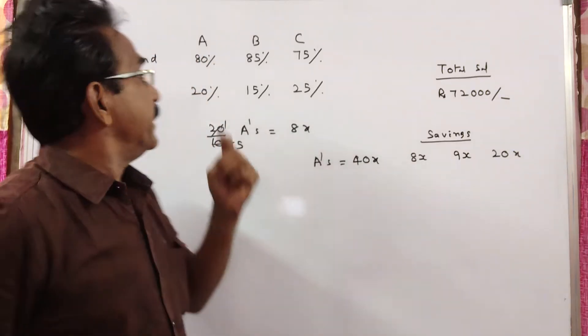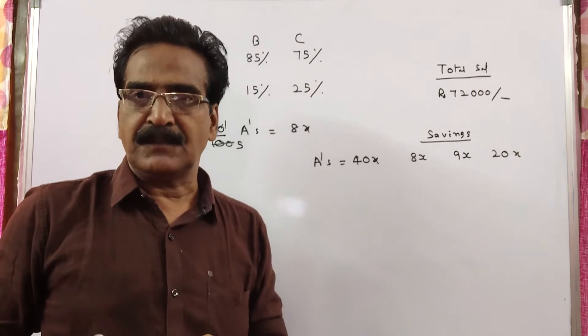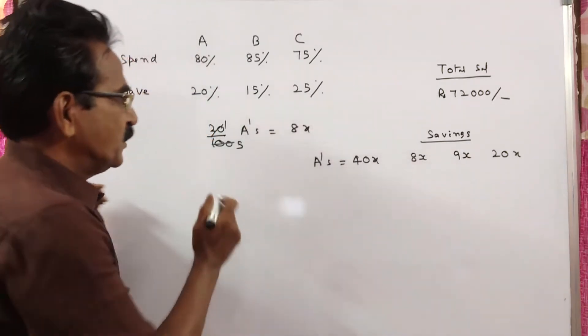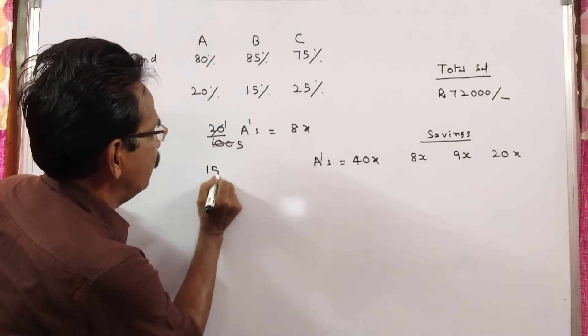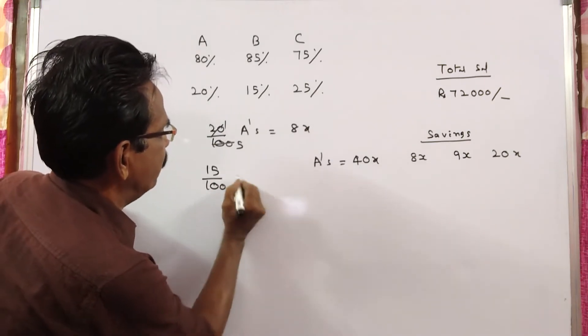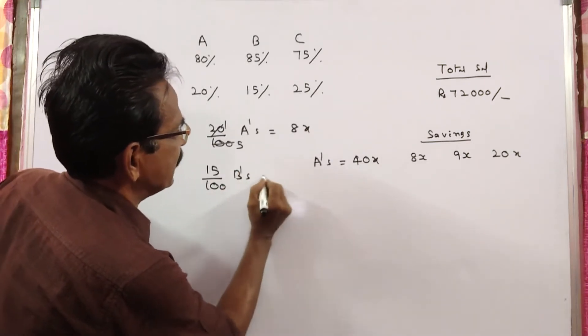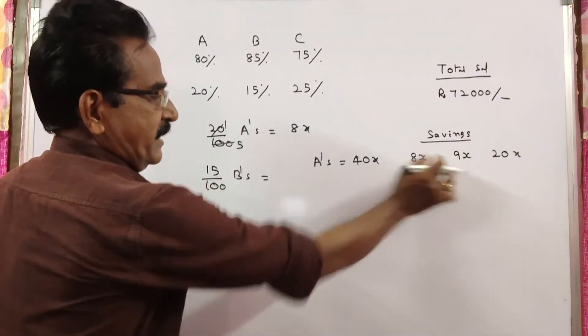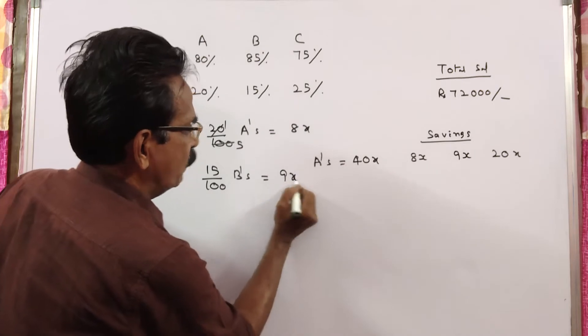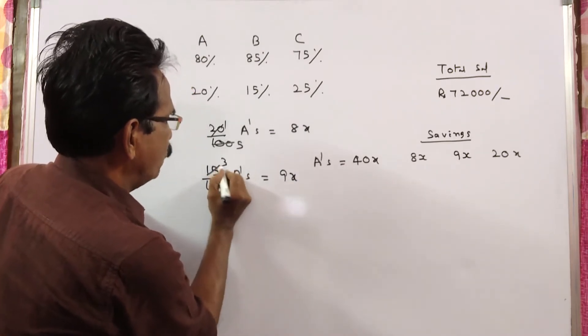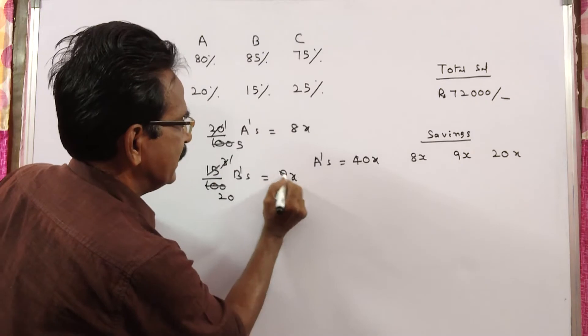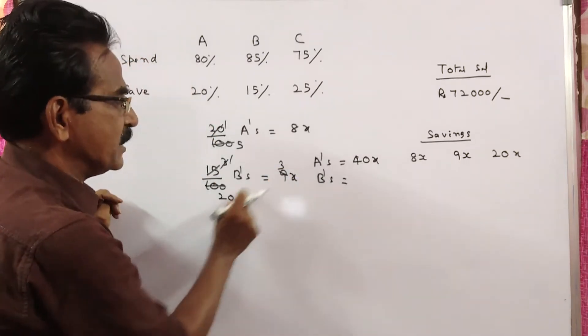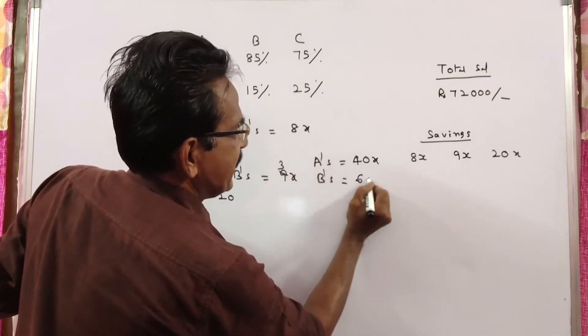In the same way, B spends 85% of his income, that means B saves 15% of his income. So 15% of B's income is his savings. What is B's savings? 9x. So this is equal to 9x. Therefore, B's income is 60x.